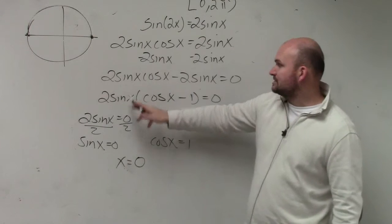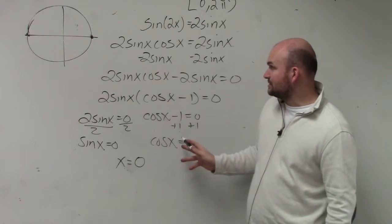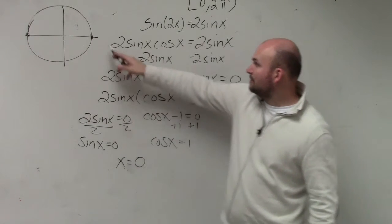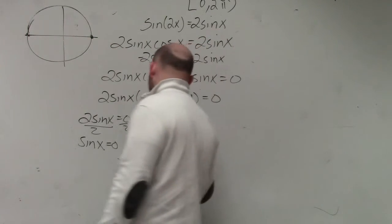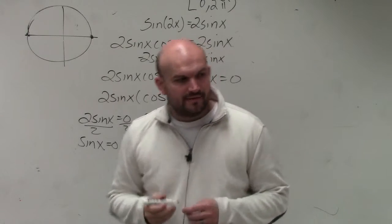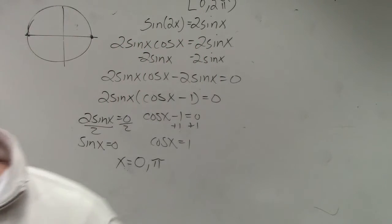And then cosine is equal to 1 at 0. Sine is 0 at the angle 0 and π. Well, we already have 0, so we're just going to include π. And that's your answer. Done.